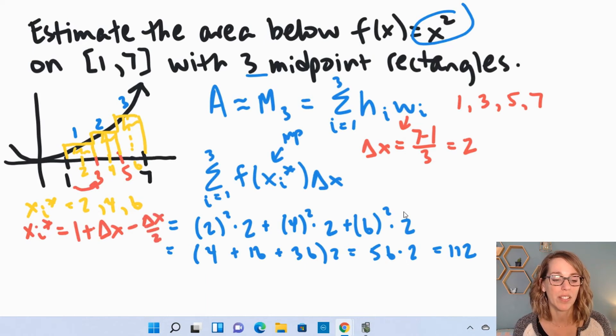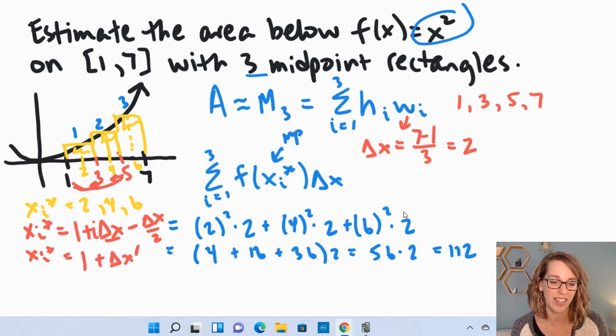If I travel delta x, that gets me over to 3, so I need to back up half of delta x, so delta x divided by 2. I'm going to do this to get to all of my midpoints, so I'm going to travel 2 delta x's, and then back up a half. So if I write this a little more simply then, I can factor out the delta x, and I get 1 plus delta x, i minus 1 half.